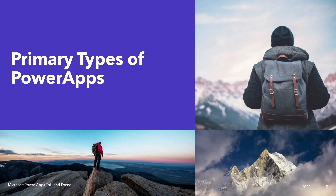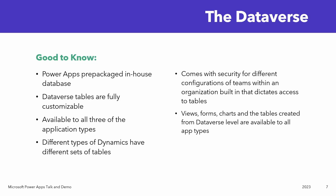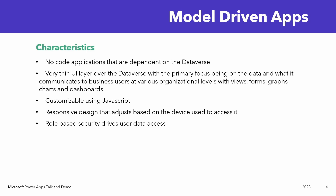There are three primary types of Power Apps. The first type are model-driven apps. They are no-code applications that are dependent on the Dataverse, which is the internal database of Power Apps that all applications built within a solution can access. A solution is basically an application toolkit that can contain multiple applications all connected to the same Dataverse. Model-driven apps typically have a very thin user interface layer over the Dataverse so the primary focus is on the data, exposing it to different users through views, forms, graphs, and dashboards.